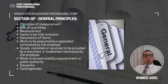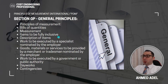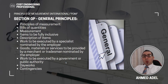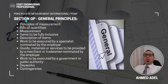These are general principles that anyone following POMI or preparing a BOQ in accordance with POMI should follow in each and every other section. The General Principles will have subsections covering: principles of measurement, the bill of quantities, measurement items to be fully inclusive, description of items, work to be executed by a specialist nominated by the employer, goods or services provided by nominated merchants, work executed by a government or public authority, dayworks, contingencies, and so on.